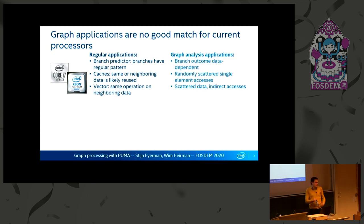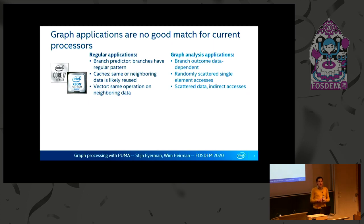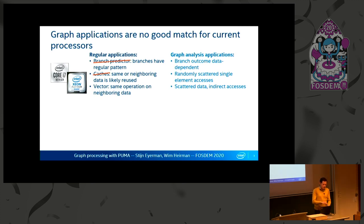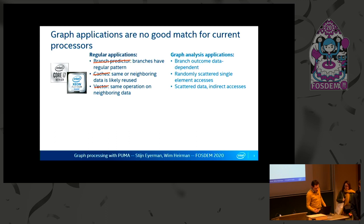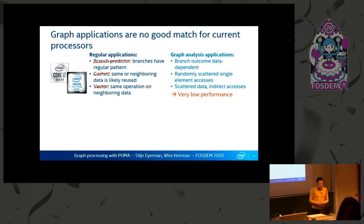But graph applications, as the previous speaker also explained, are not that suitable for these architectures. Many graph applications have branches that are data-dependent, so the actual outcome depends on the data in the graph, which is not predictable. So branch predictors don't work well. Data is also accessed in a scattered way — you access the neighbors, and the neighbors are not the next nodes in your list but scattered all over the place. So caches don't work well, and the same for vector operations. We see very low performance on regular CPUs for graph applications.